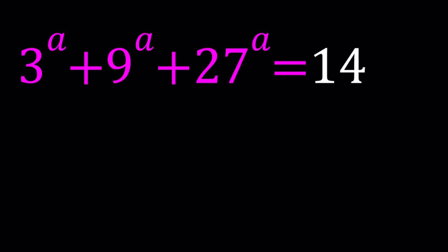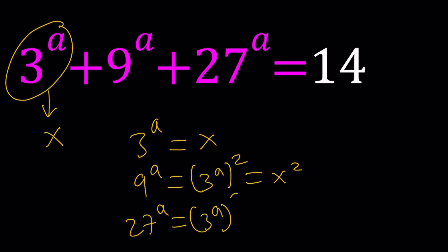So let's go ahead and turn this into a polynomial by using substitution. Notice that all of these numbers are powers of 3. 9 is 3 squared, 27 is 3 to the third power. Don't worry about the 14 for now. So I'm going to call this x because we're going to use it on our graph. So if 3 to the power a is x, then 9 to the power a is just going to be 3 to the power a squared, which is x squared. And 27 to the power a is 3 to the power a cubed, and that's x cubed.